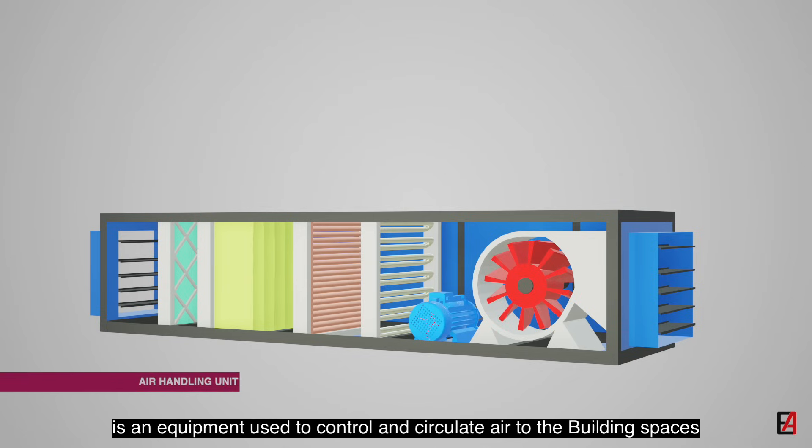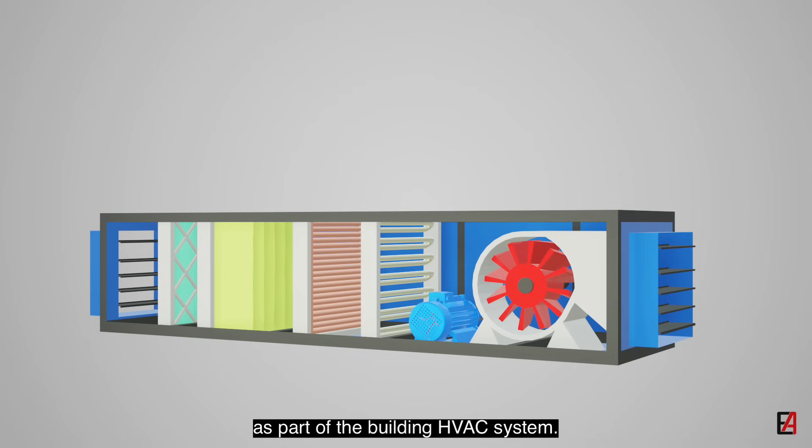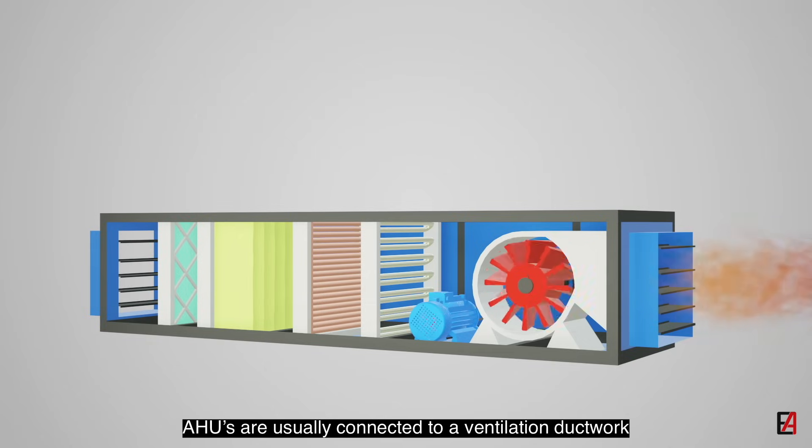AHU - Air Handling Unit is an equipment used to control and circulate air to the building spaces as part of the building HVAC system. AHUs are usually connected to ventilation ductwork that distributes air to the building spaces.